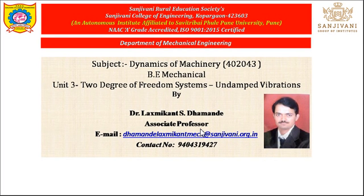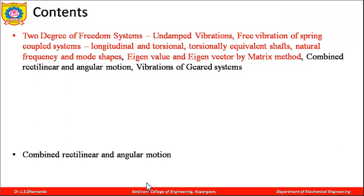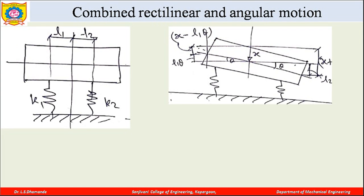Dynamics of Machines, Unit 3: 2 Degrees of Freedom systems, undamped vibrations. In this presentation, we are going to see how a combined rectilinear and angular motion occurs in some systems and how we can determine the natural frequencies of it. When there is combined angular and rectilinear motion, there are two displacements: one is rectilinear (linear) displacement and the other is angular displacement, so it is a 2-degree-of-freedom system.